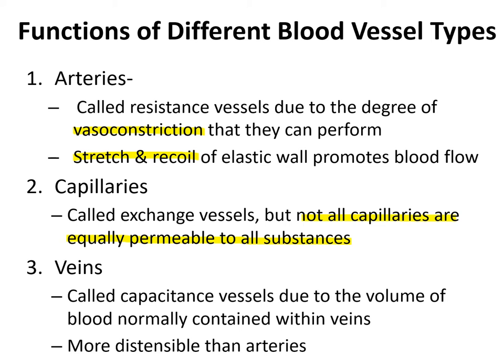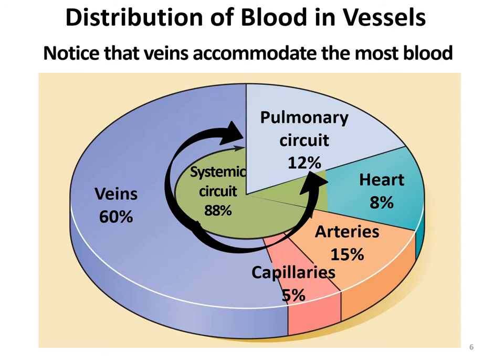Veins are often called capacitance vessels — as in capacity — due to the volume of blood that they can hold. They contain the most volume of blood at any one time because their walls are quite distensible, more than arteries are. There's somewhere between four and six liters of blood in an adult's body. From this diagram, you can see that at any one time, 88% of that volume of blood is contained within vessels of the systemic circuit, shown here in green.